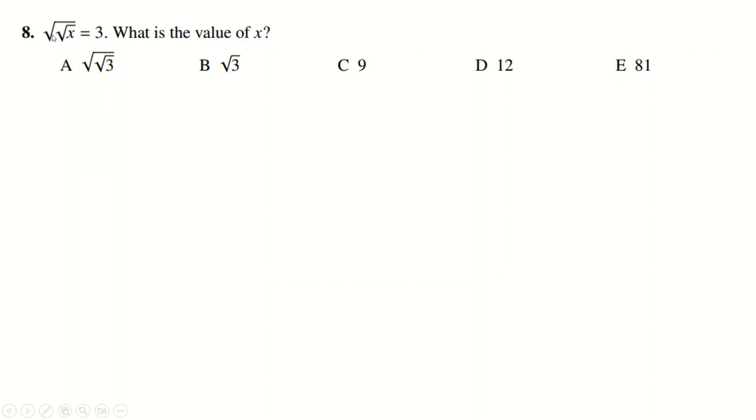Question number 8, so we square both sides to get rid of this square root, to get root x equals 9. Then we square both sides again to get rid of this square root, and we get x equals 81.